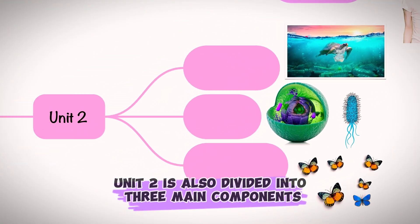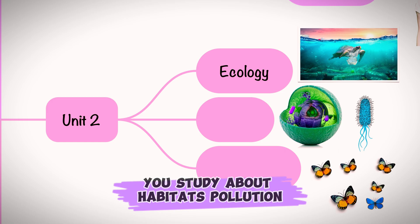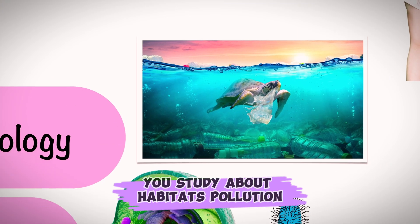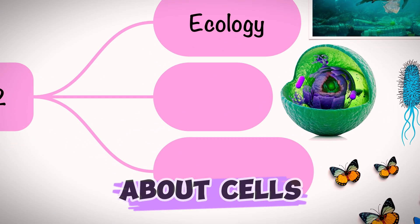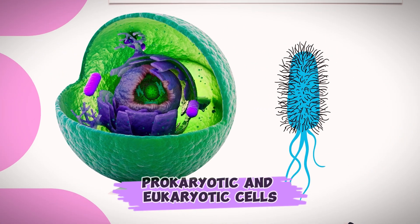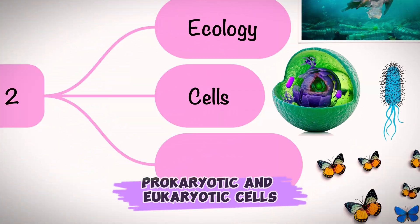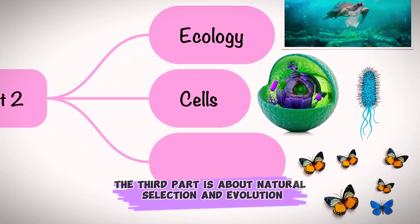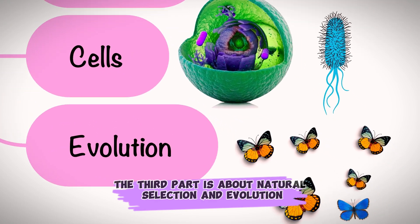Unit 2 is also divided into three main components. The first part is about ecology — you study habitats and pollution. There's another component about cells, meaning you study bacterial, prokaryotic, and eukaryotic cells. The third part is about natural selection and evolution.